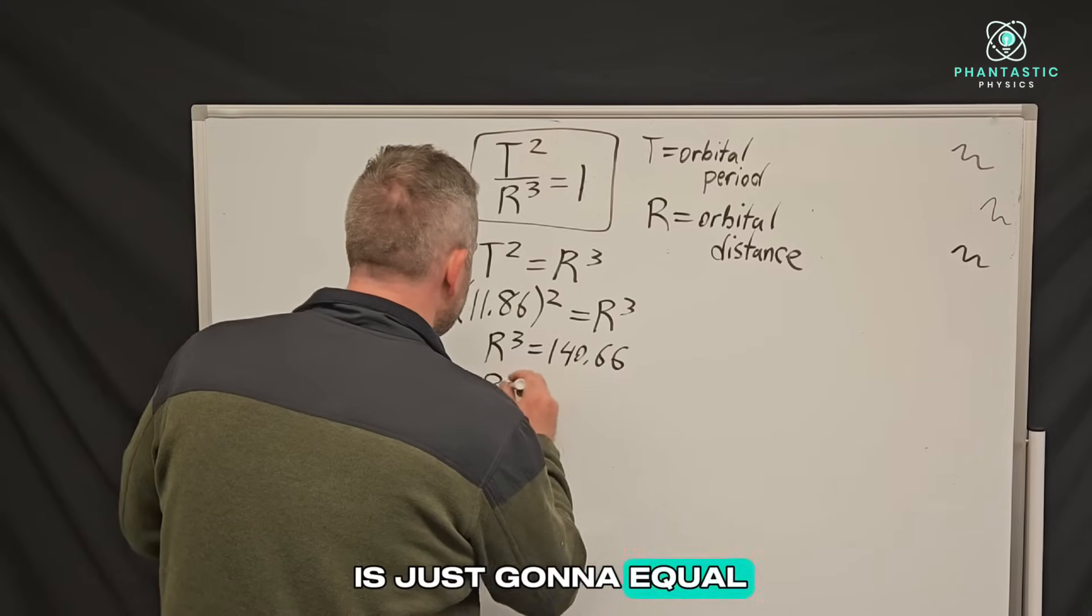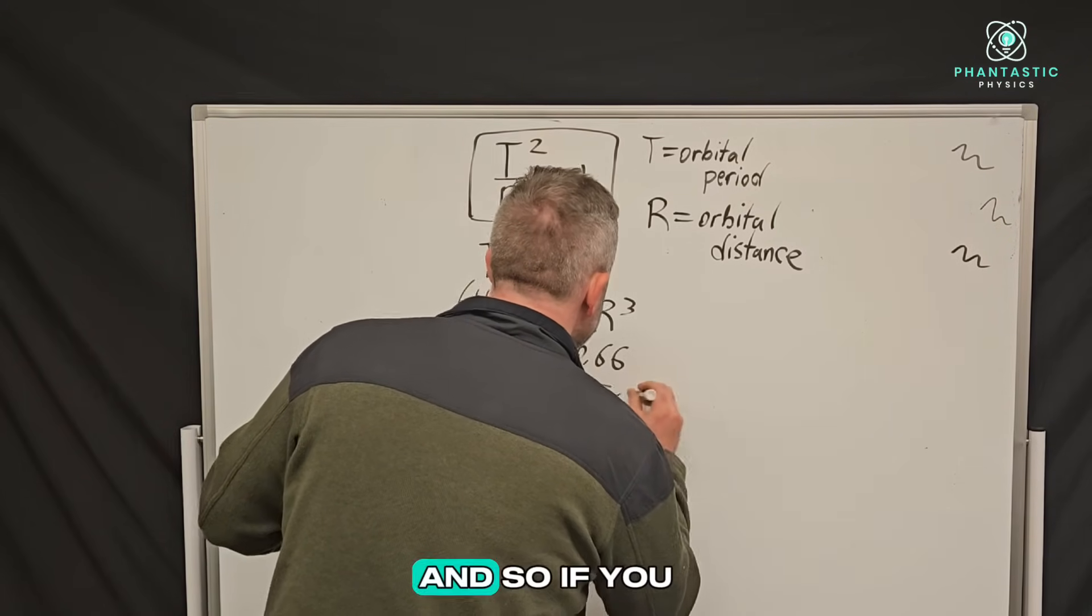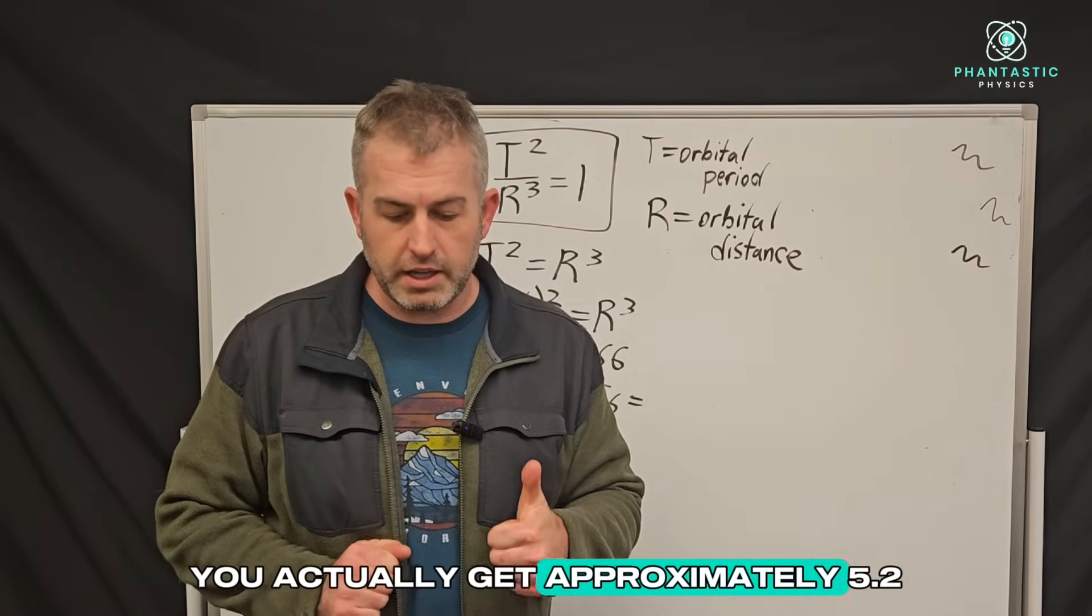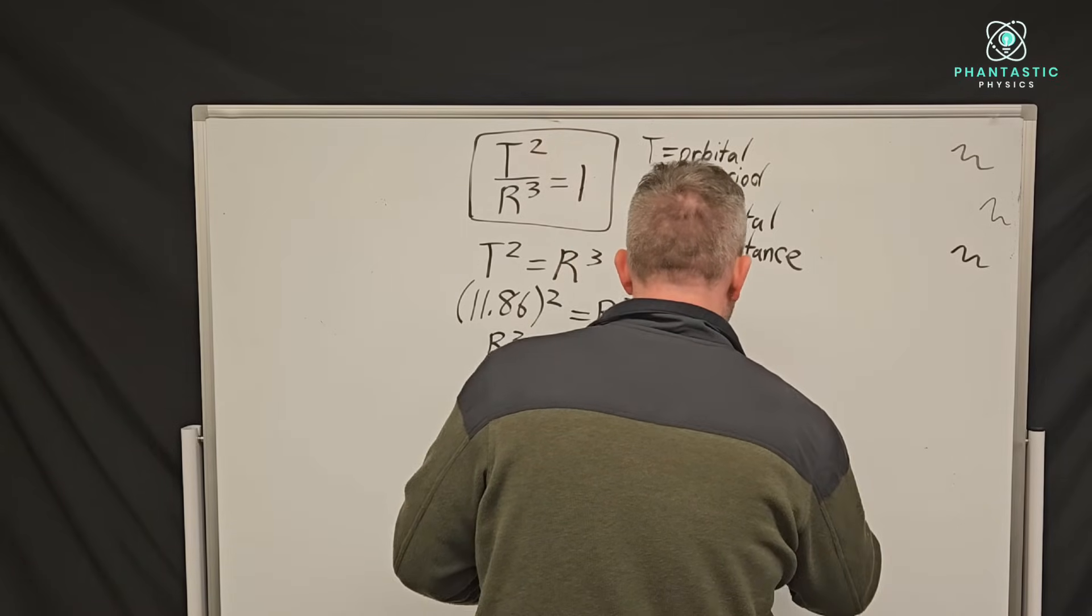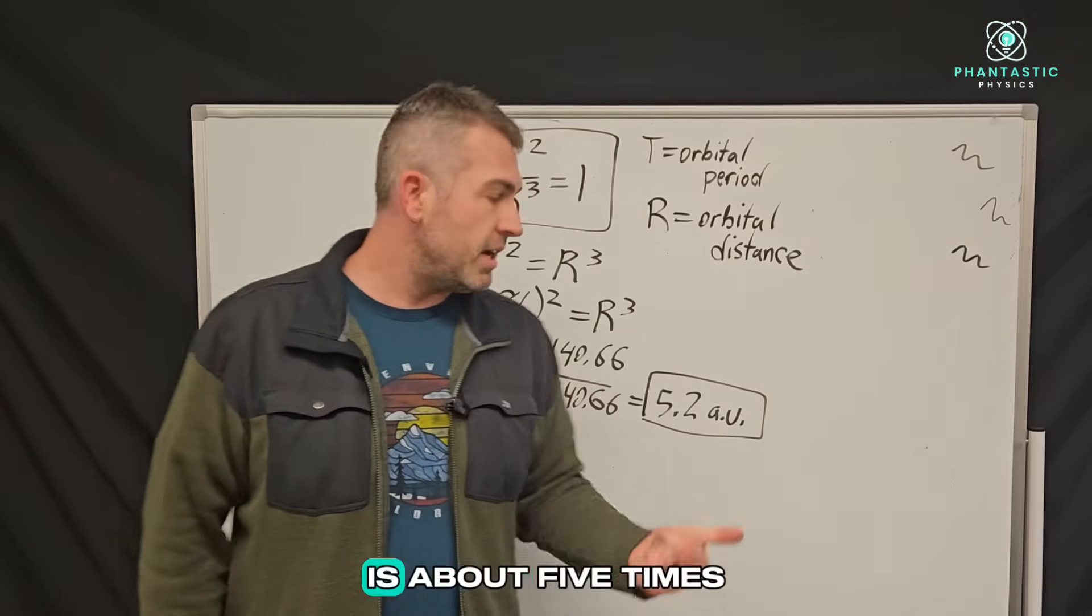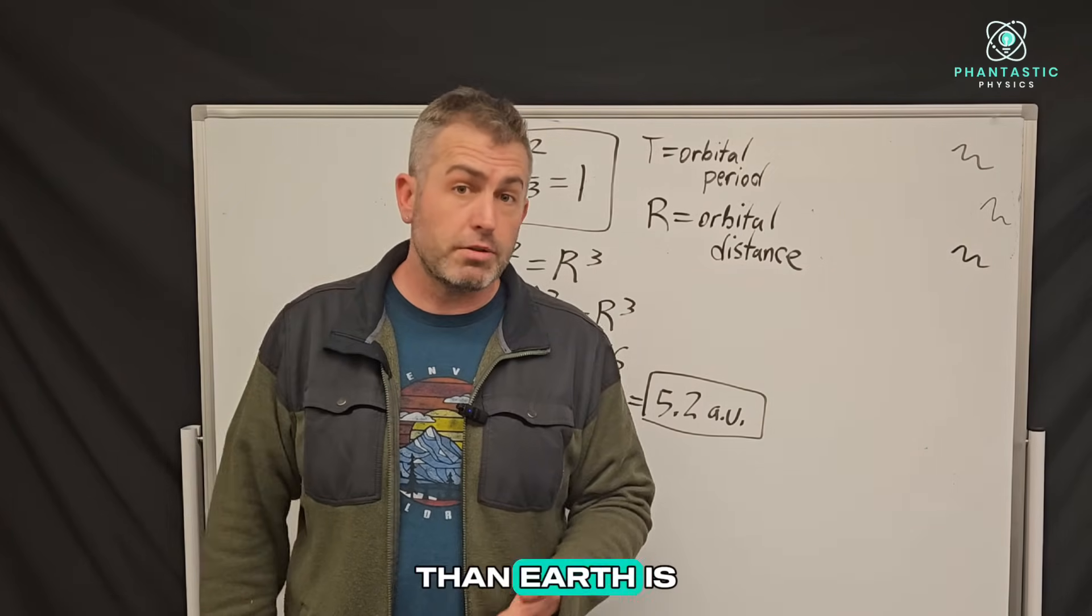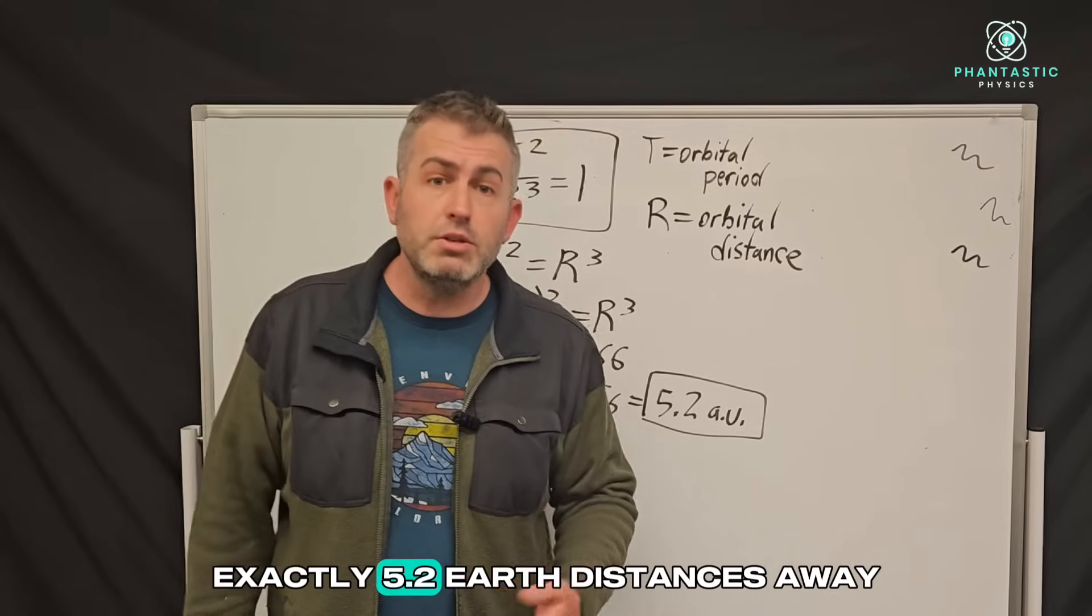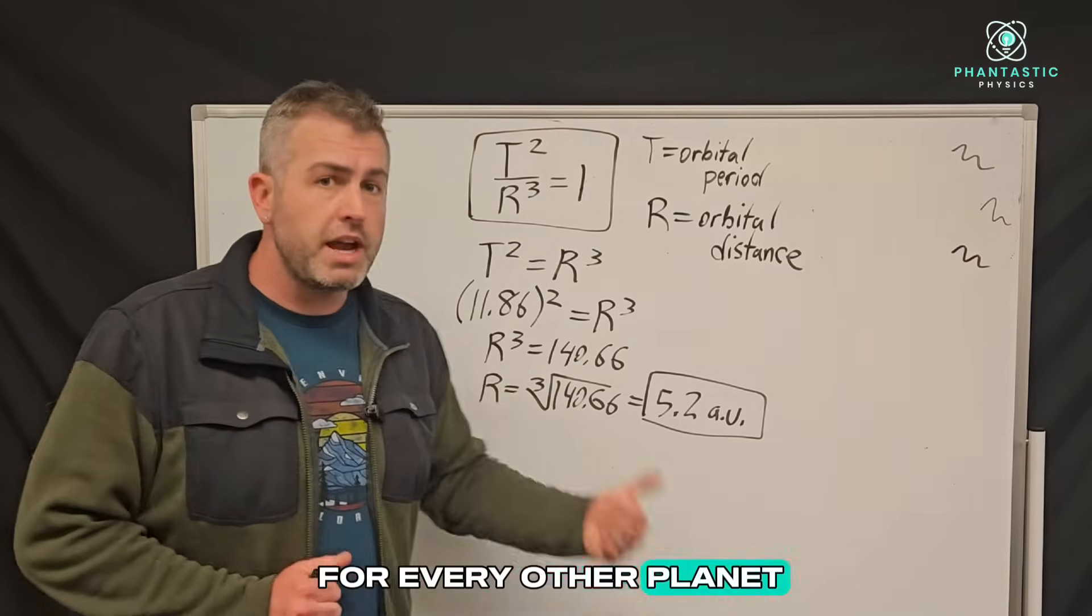So R cubed equals 140.66. And then R is just going to equal the cubed root of this number. And so if you do the calculation, you actually get approximately 5.2. And so that means that Jupiter is about five times further away from the sun than earth is. It's about five earth distances away or more exactly 5.2 earth distances away. And again, we could do this for every other planet in the solar system.